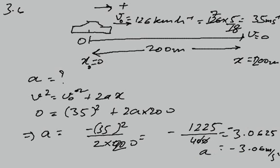And we are asked what is retardation. Retardation is just negative of the acceleration, so retardation is equal to 3.06 meters per second squared.